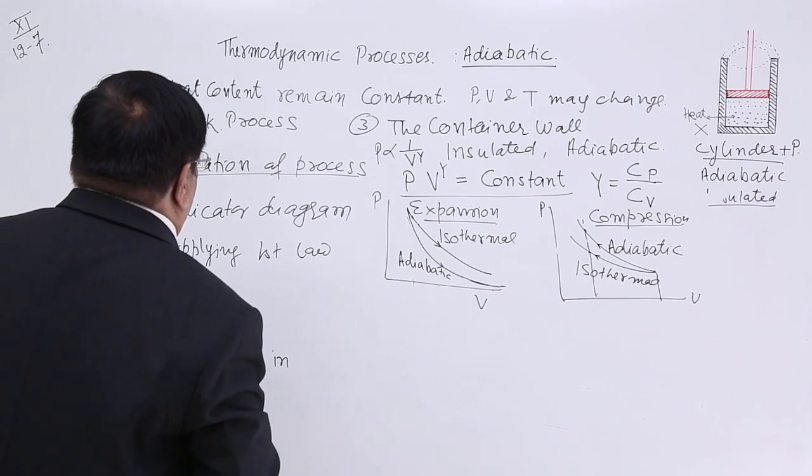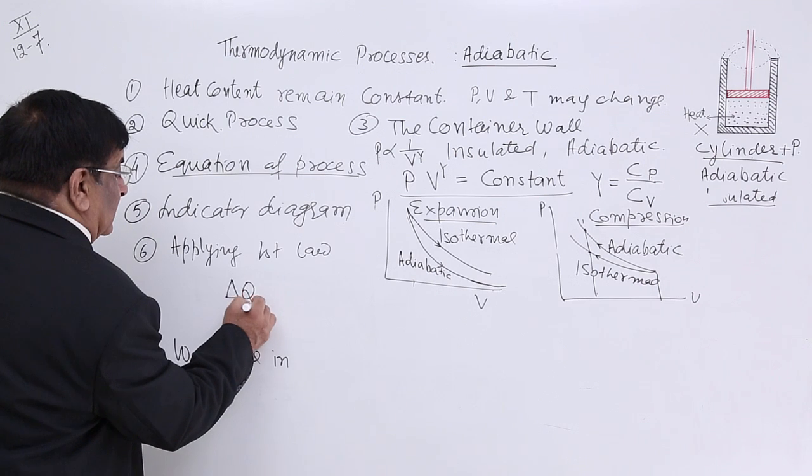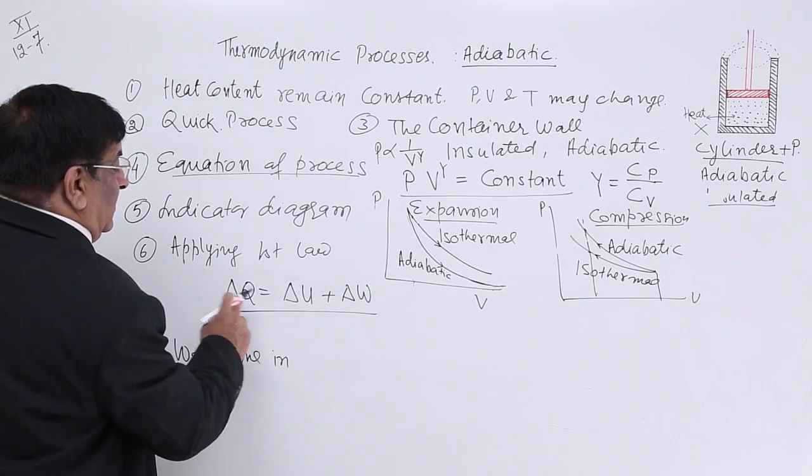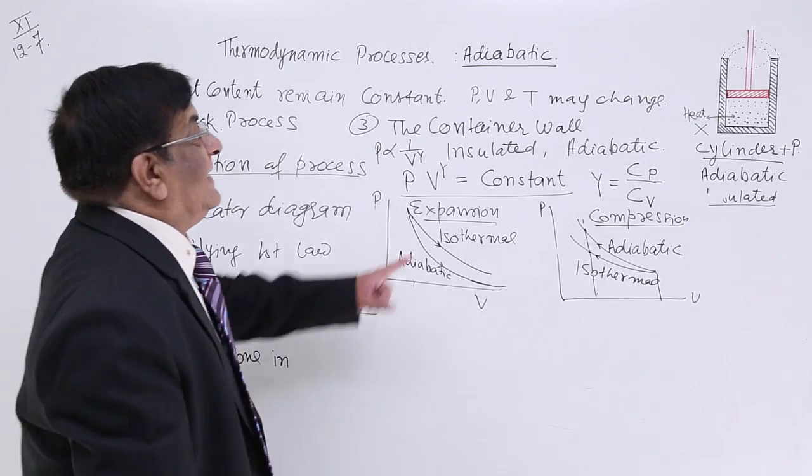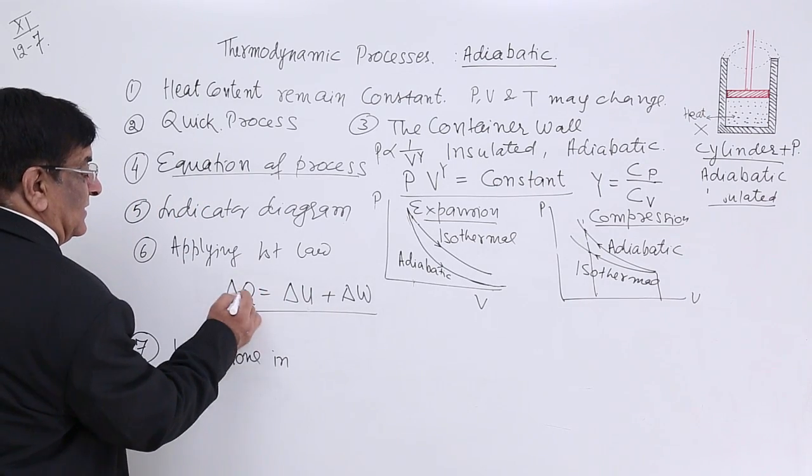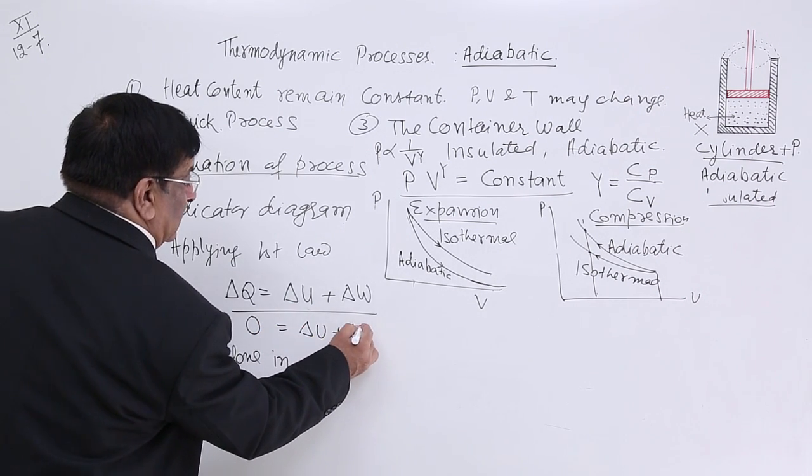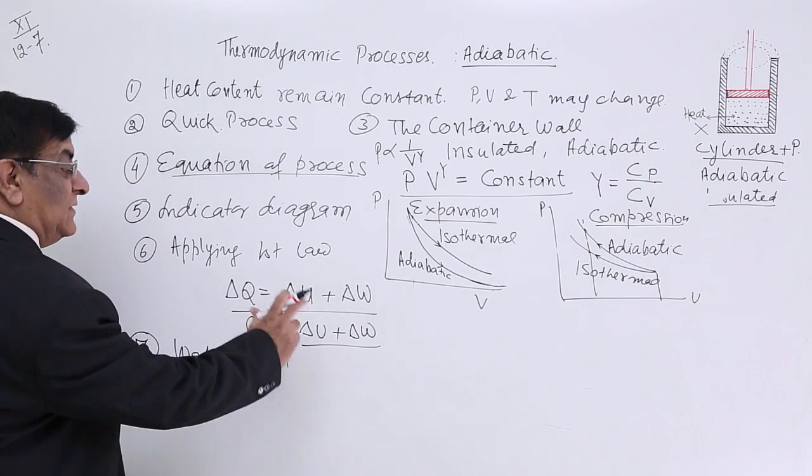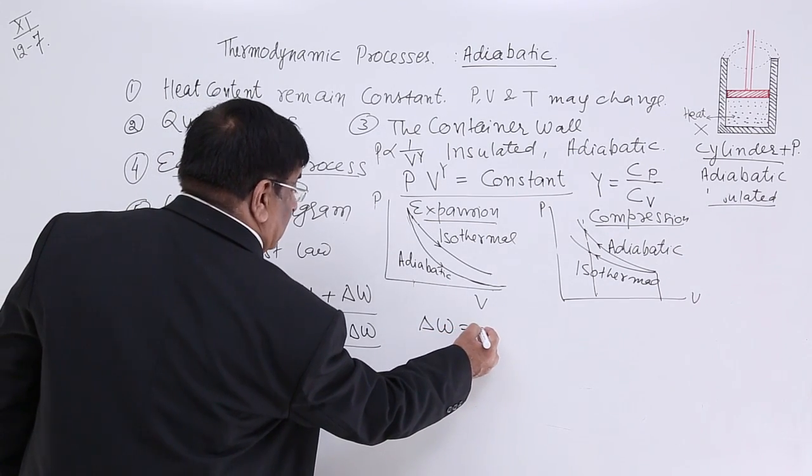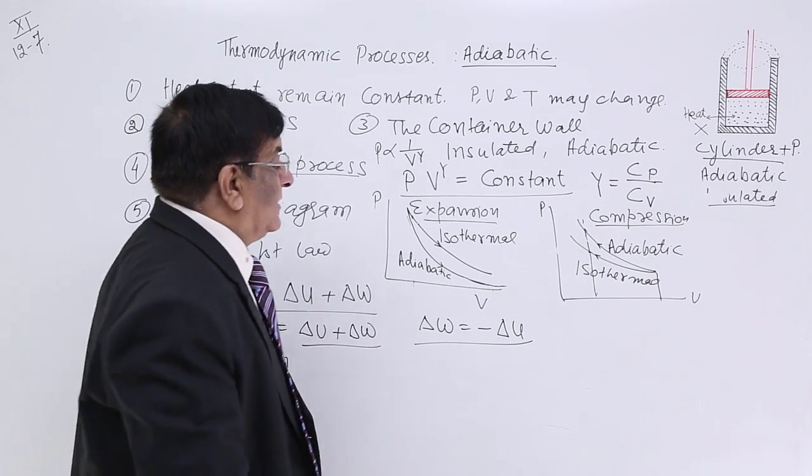Then, application of first law. The application of first law of thermodynamics, that says that when heat delta Q is given, it is change in internal energy plus work done. This is first law, this is how the heat is used. Now, in adiabatic, what does not change? The heat contents remain constant. So, the change in heat is zero, no change, is equal to delta U plus delta W. Now, this gives us one thing, that is, delta W is equal to negative of delta U, internal energy.